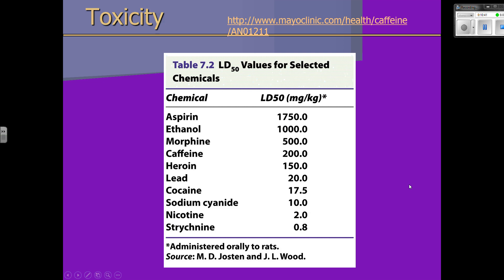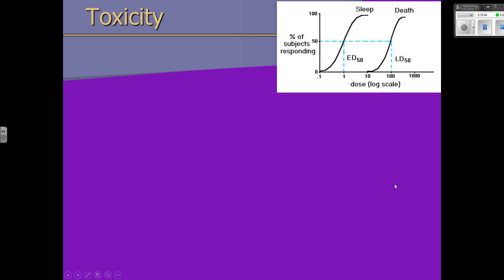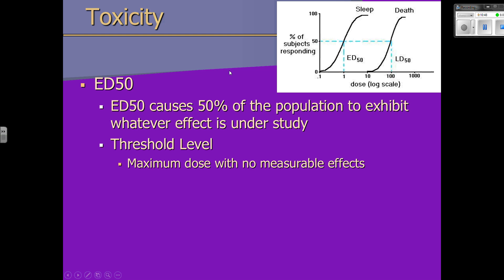Now we're going to talk about the ED50. ED50 stands for effective dose, 50%. The definition: the effective dose that causes 50% of the population to exhibit whatever effect is under study. It measures the effectiveness of a drug and is substantially less than an LD50. We can use it to measure biological responses.